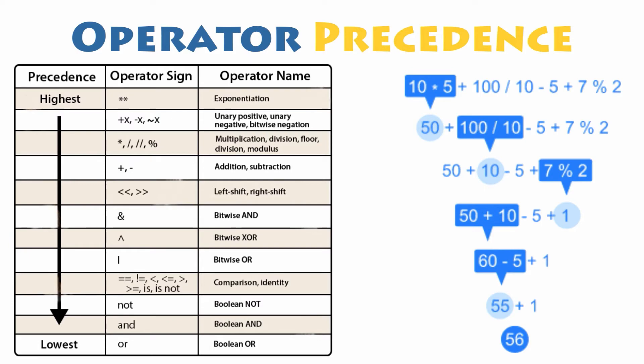Operators at the top of the table have the highest precedence, and those at the bottom of the table have the lowest. Any operators in the same row of the table have equal precedence.